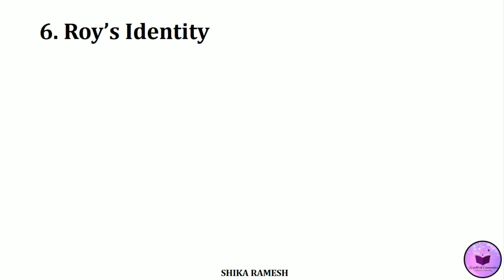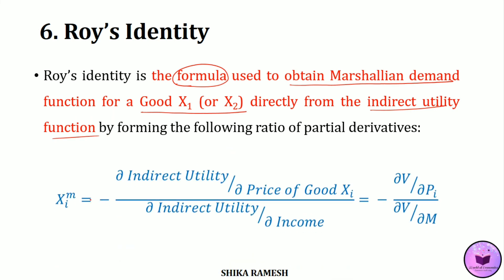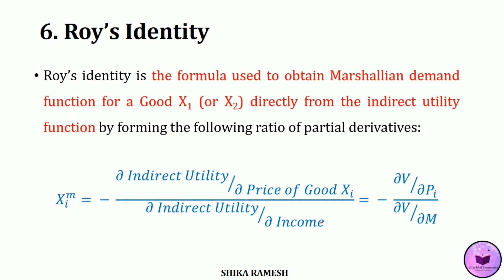The last and one of the most important properties is Roy's Identity. Roy's Identity is a formula used to derive the Marshallian demand function for good x or y directly from the Indirect Utility Function. It is represented as: xm_i (the Marshallian demand for good xi) equals minus the partial derivative of indirect utility with respect to the price of good xi, divided by the partial derivative of indirect utility with respect to consumer's income. Symbolically: xm_i = −(∂v/∂pi) / (∂v/∂m).